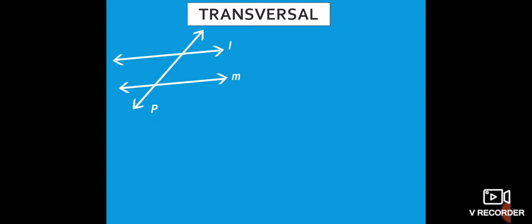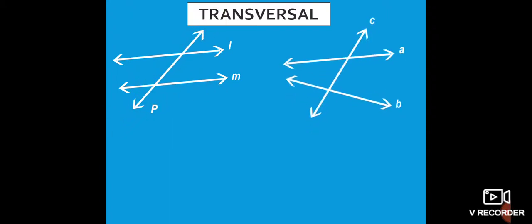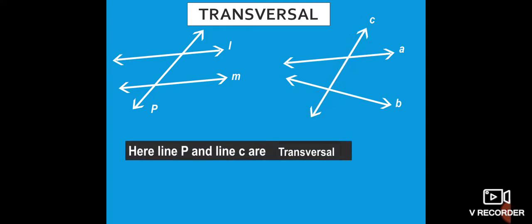Here you can see a line L, another line M, and these two lines are cut by a line P. L and M are cut by another line P. Next figure: line A, line B, and line C cut by these two lines. Here, line P and line C are called transversal.